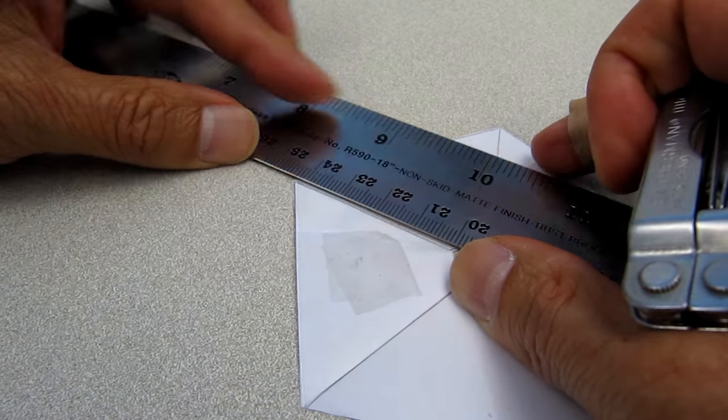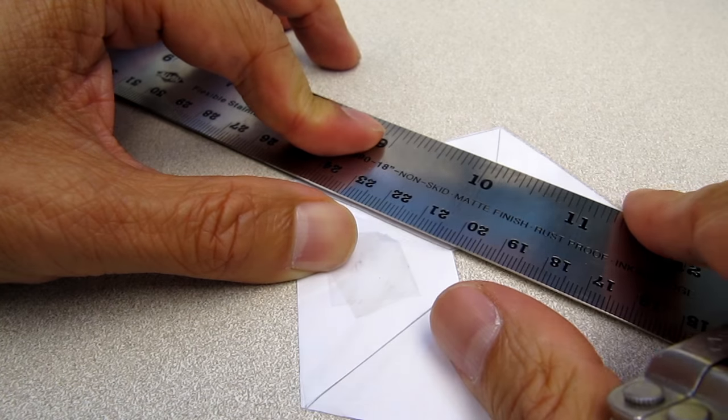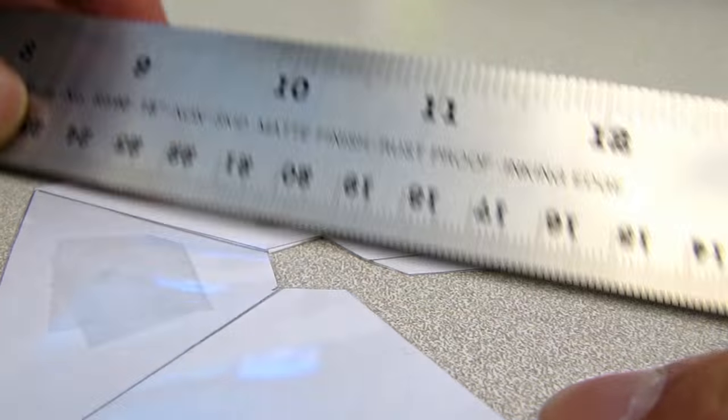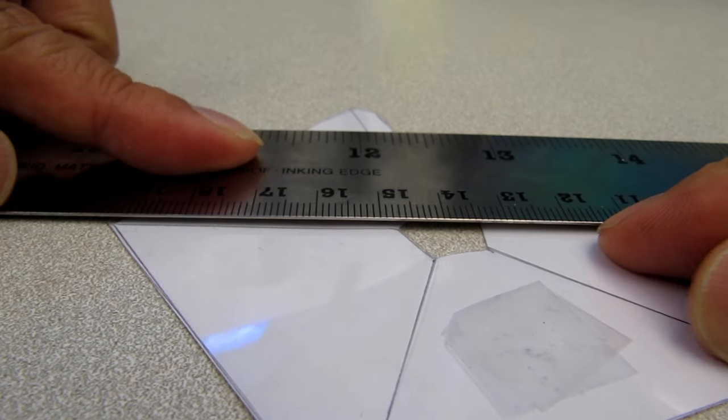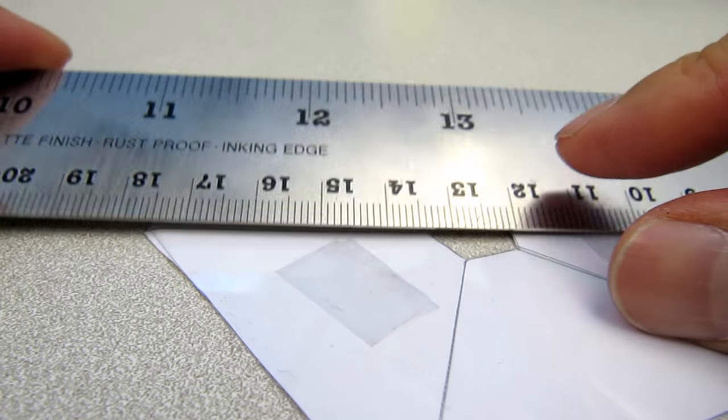At this point we need to score the template at the fold lines. I'm just using my Micro Leatherman knife to do this and use a straight edge as a guide. Just lightly score the plastic but don't cut through it.